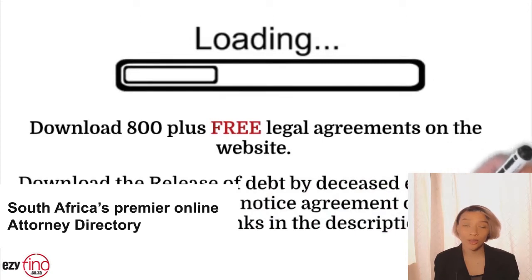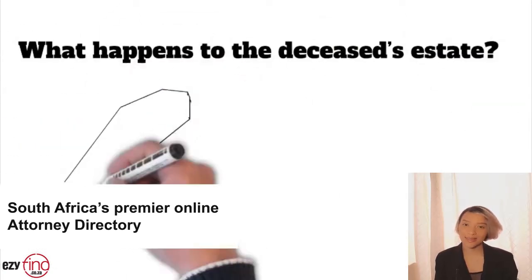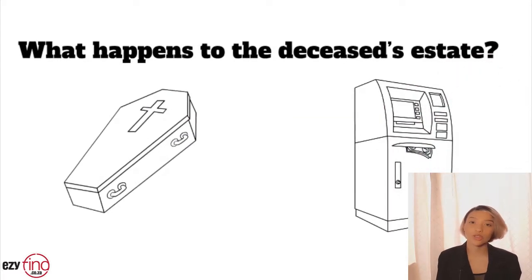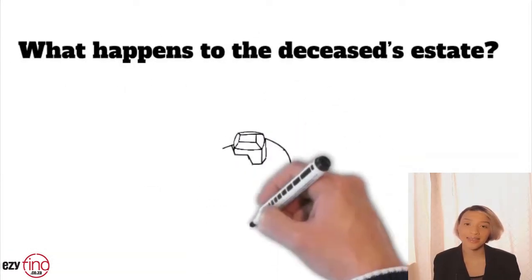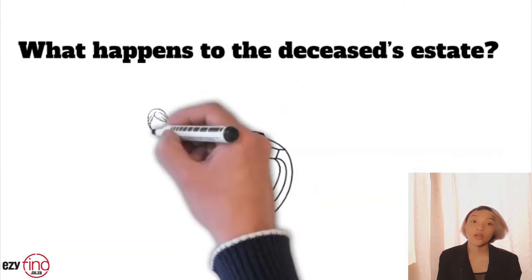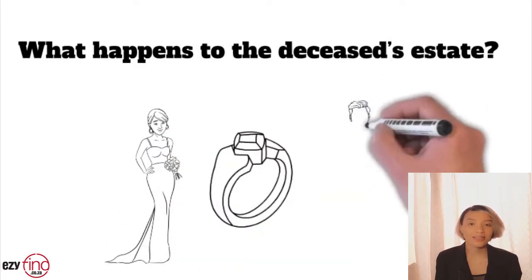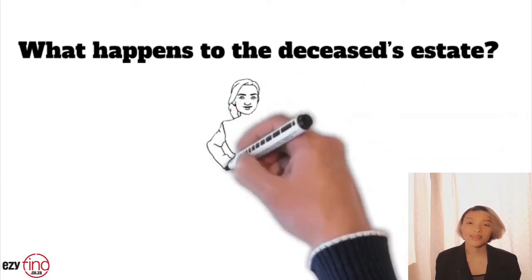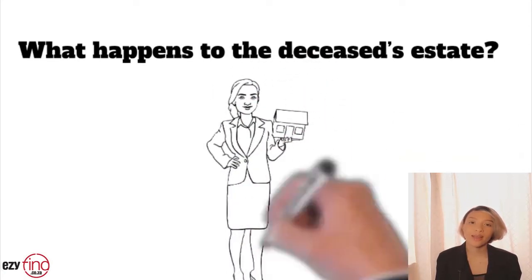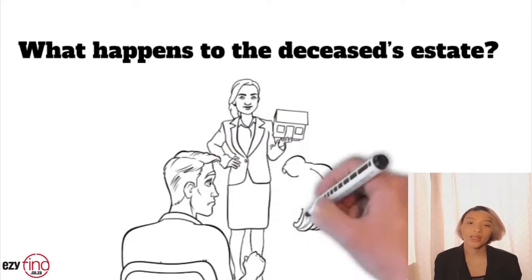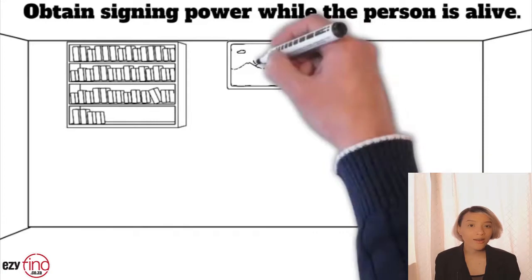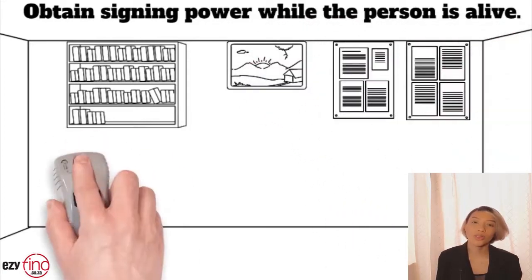What happens to the deceased estate? At death, the estate of the deceased person is frozen and no one may withdraw funds from the deceased's bank accounts or deal with any estate assets without the necessary permission from the master of the high court. If the deceased was married in community of property, the joint estate is frozen, which often creates hardship for the surviving spouse. While the person is alive, obtain signing power on bank accounts to prevent this.